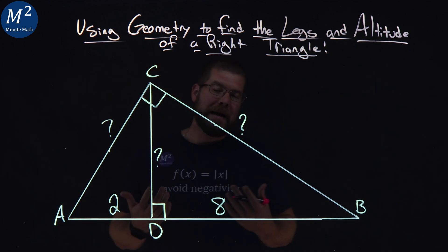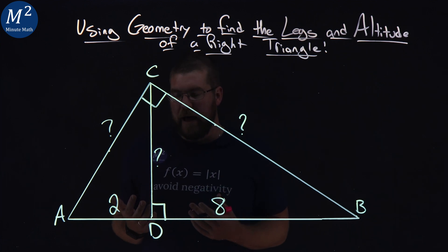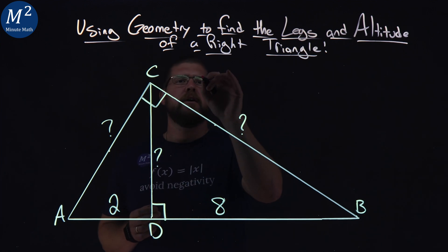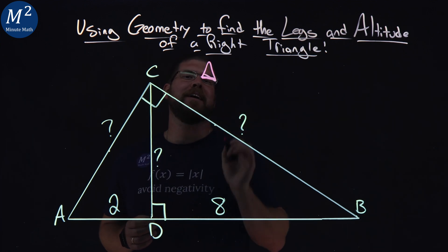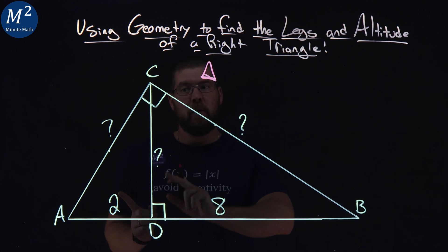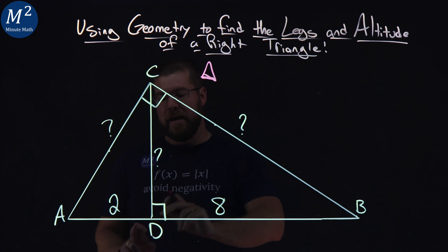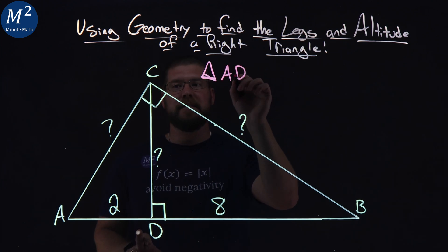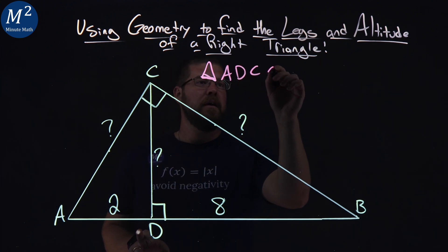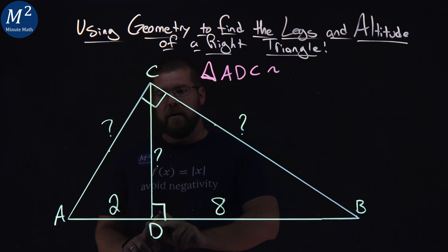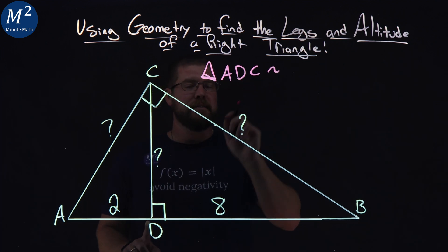So I'm going to write these right triangles out to show that they're similar here. And in doing so, we have a triangle here. I want to make sure I keep the same order, the small leg to long leg. So ADC, small leg, long leg in the order, ADC.